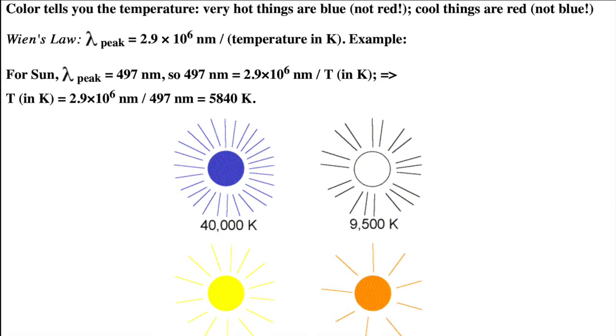For example, the Sun's surface has a peak wavelength at the green-yellow wavelength of 497 nanometers. So we can derive a temperature of the surface of 5,840 Kelvin, which is about 10,000 on the Fahrenheit scale.